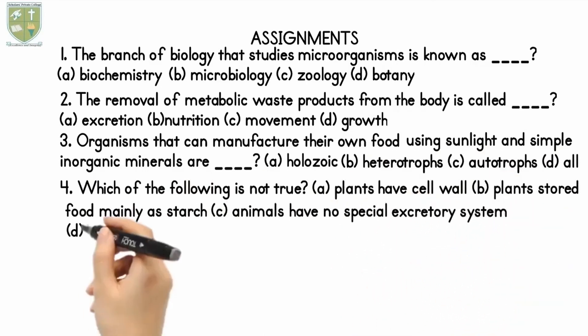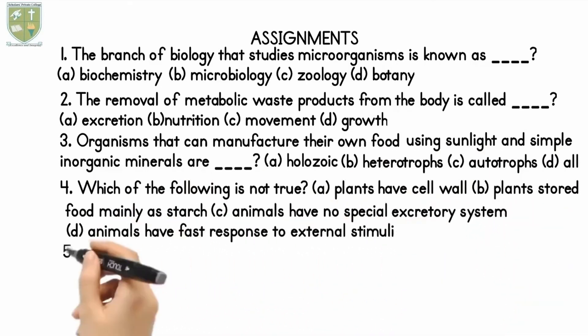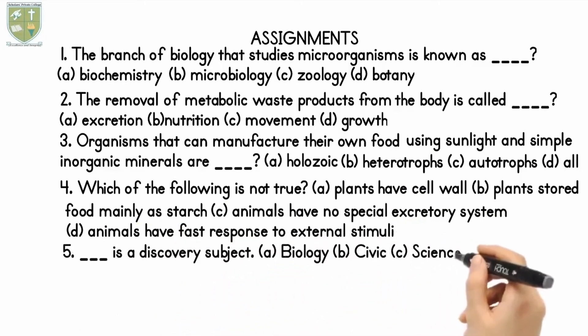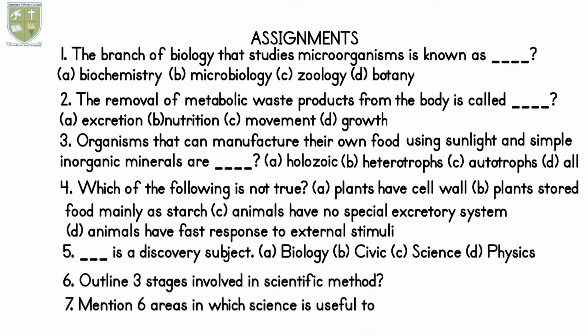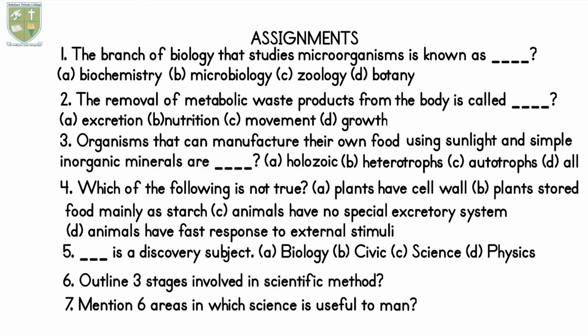3. Organisms that can manufacture their own food using sunlight and simple inorganic minerals are ___. A. Holozoic, B. Heterotrophs, C. Autotrophs, D. All of the above. 4. Which of the following is not true? A. Plants have cell wall, B. Plants store food mainly as starch, C. Animals have no special excretory system, D. Animals have fast response to external stimuli.